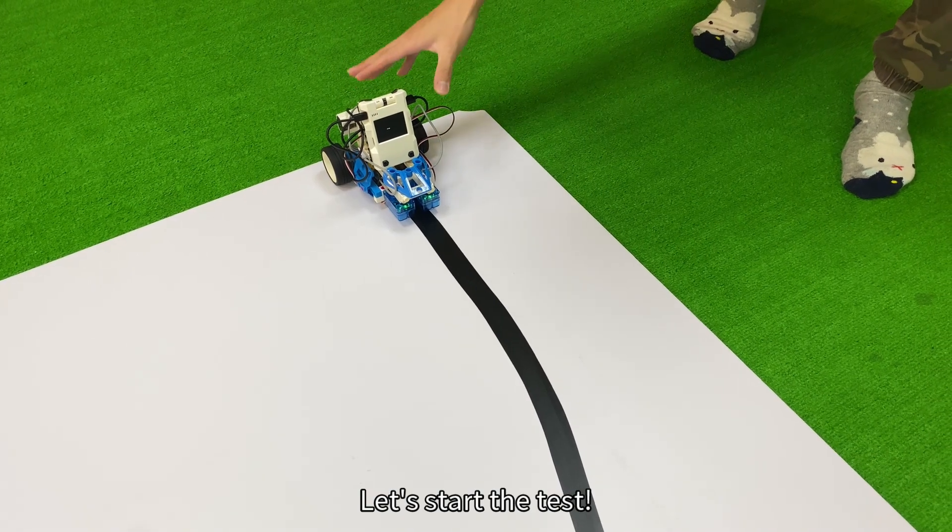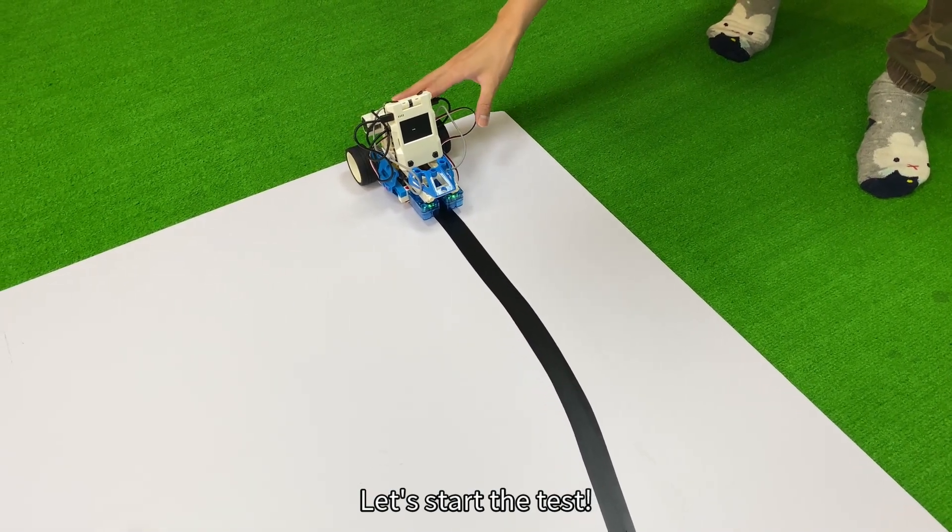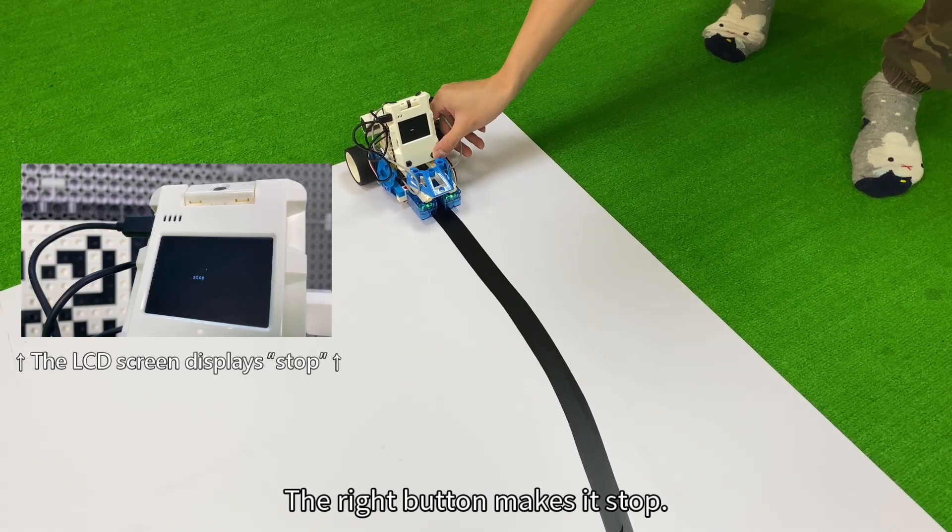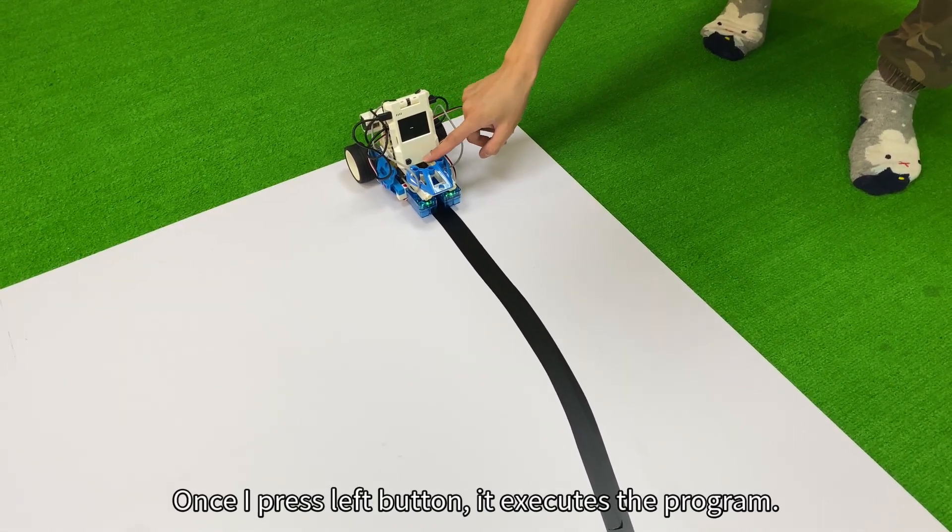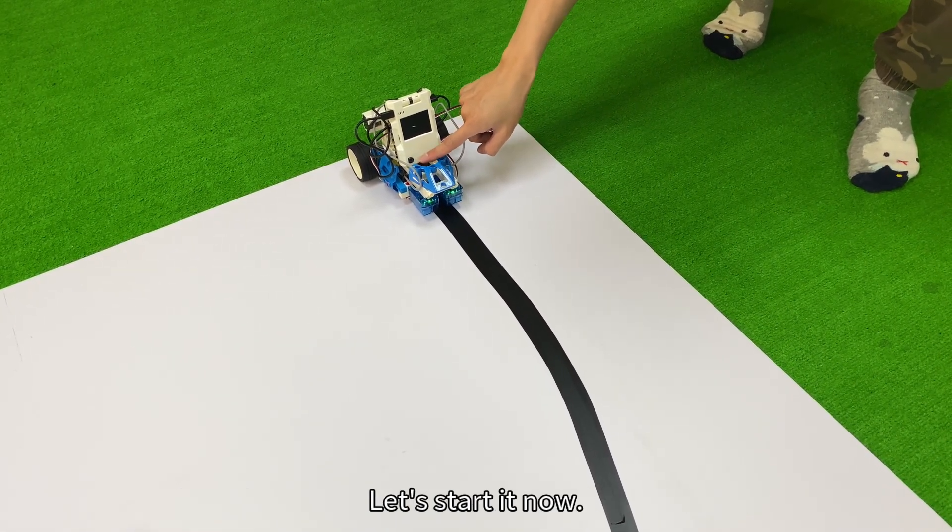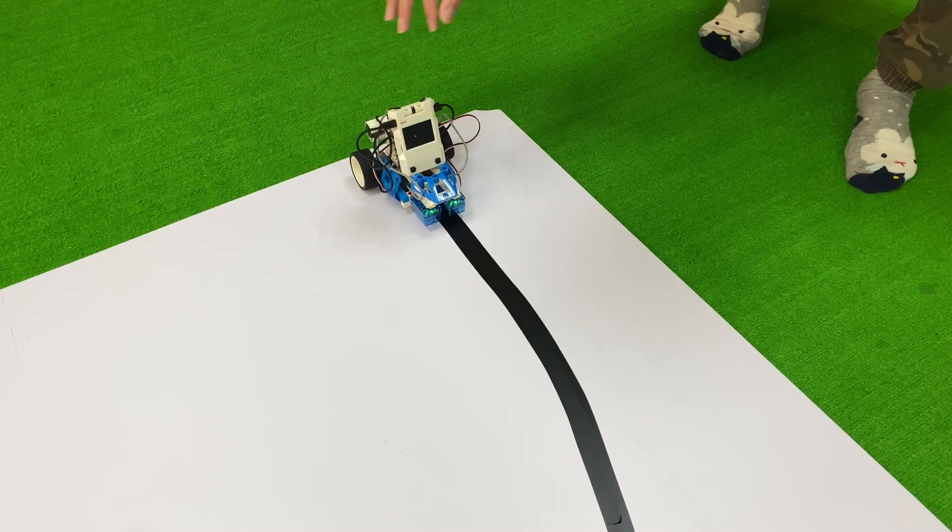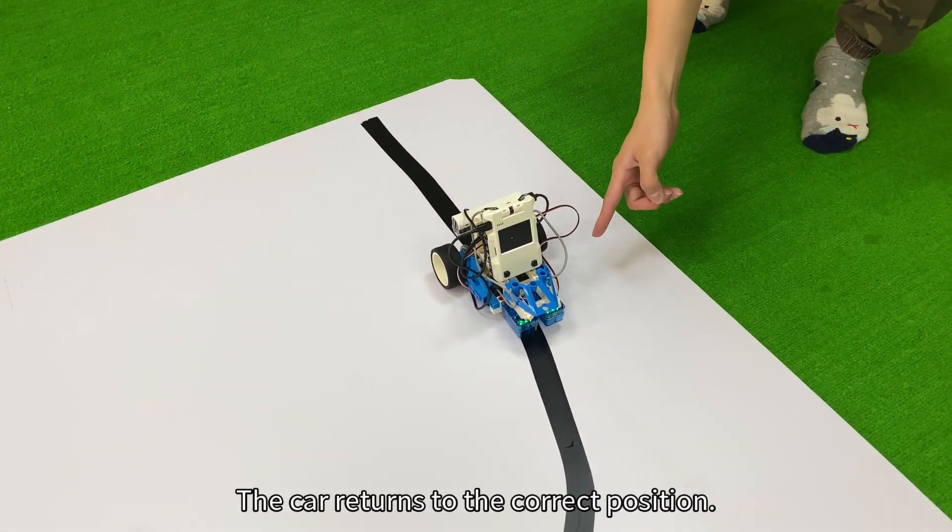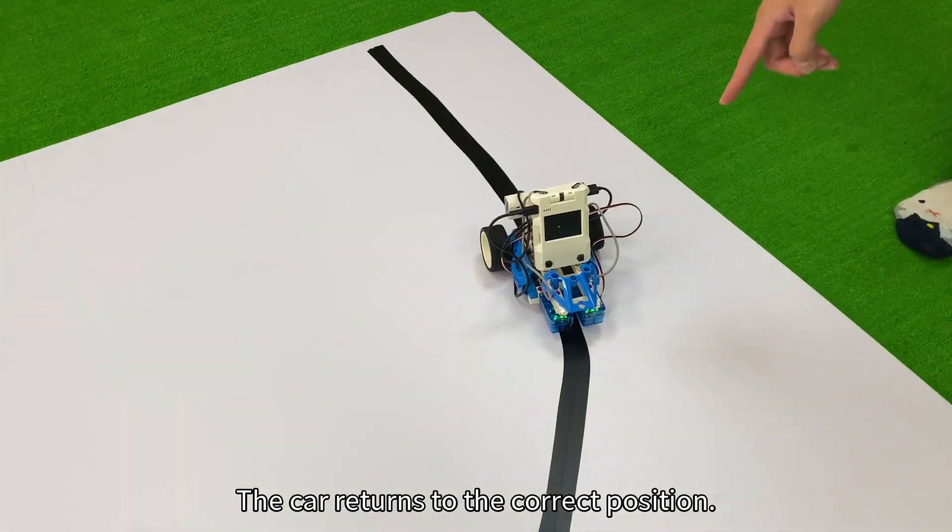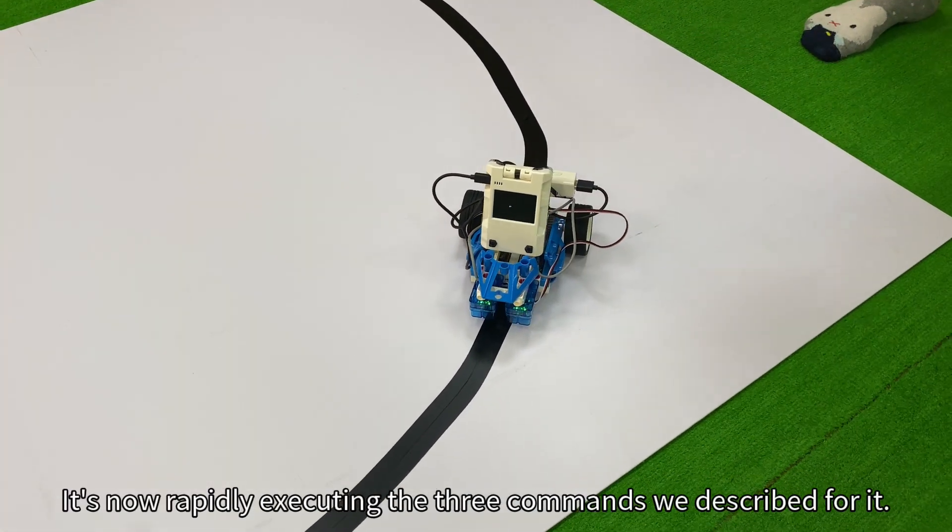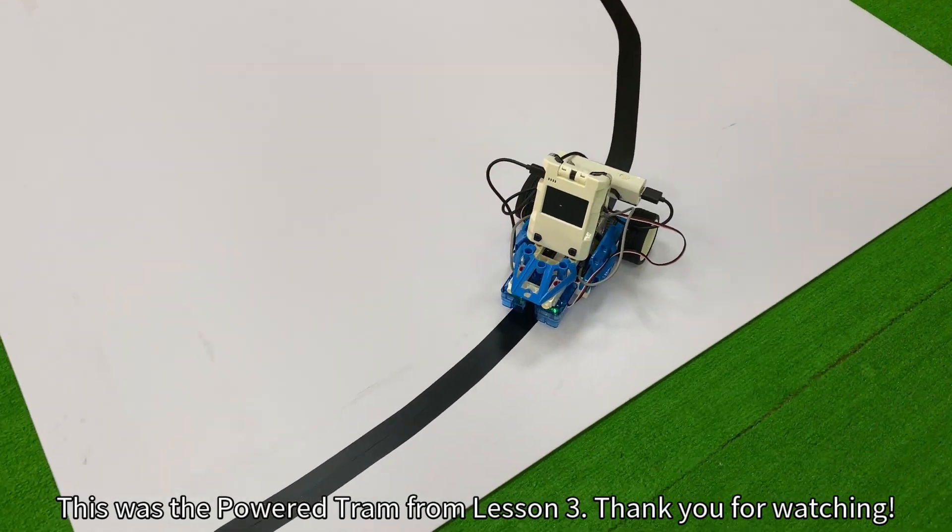Let's start the test. First we see stop on the screen. The right button makes it stop. Once I press left button, it executes the program. Let's start it now. You can see when the car detects a black line, the car returns to the correct position. It's now rapidly executing the three commands we described for it. This was the powered tram from lesson three. Thank you for watching.